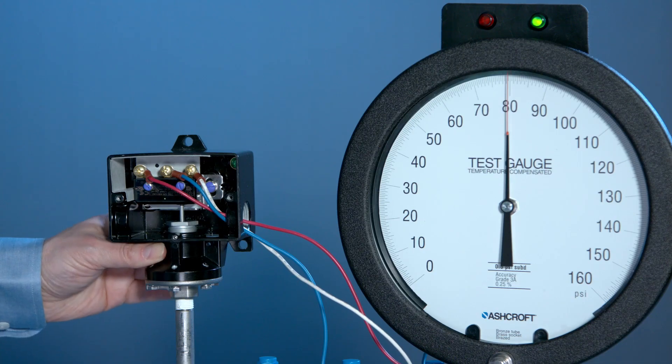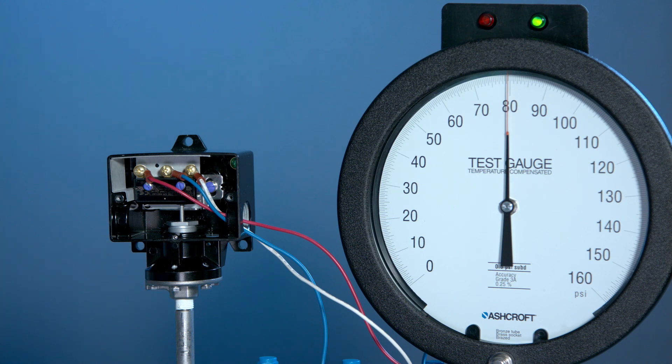The switch just turned on. Now what we're going to do is lower the pressure back to zero and come up slowly to see exactly the turn on point of the switch.